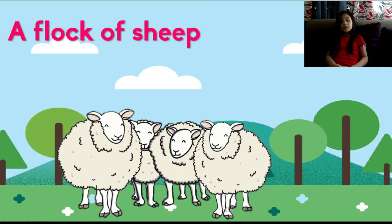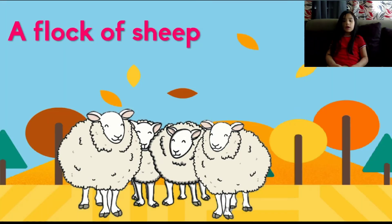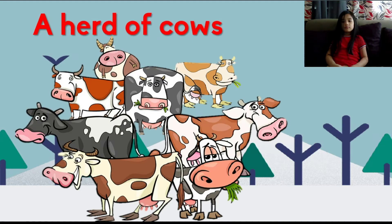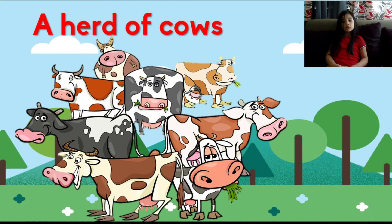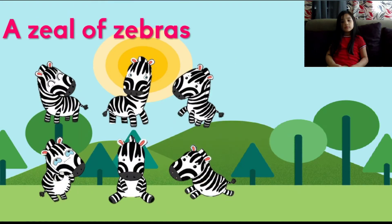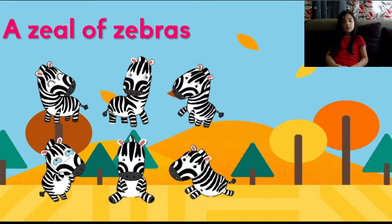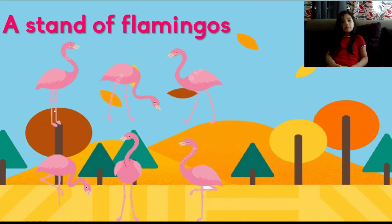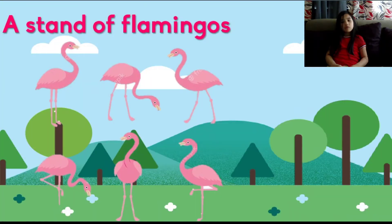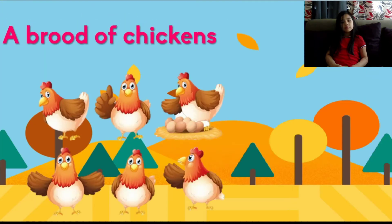A group of sheep is called a flock. A group of cows is called a herd. A group of seals is called a herd. A group of flamingos is called a stand.